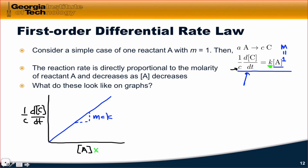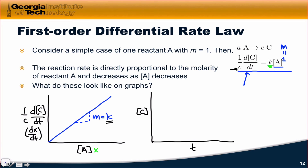If we plot 1/c · dC/dt — the standard rate — on the y-axis as a function of A, the slope is simply equal to the rate constant. If we think about the usual plot of the concentration of C versus time, C builds up rapidly in the early stages and more slowly in the later stages of the reaction as we approach the equilibrium state.